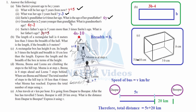Grandmother is 2 years younger than grandfather. We have written grandfather's age as 6y, so grandmother's age is 6y minus 2. Now Sarita's father's age is 5 years more than 3 times Sarita's age. Sarita's age is y years, so 3 times means 3y, and plus 5 because it is 5 years more — therefore 3y plus 5.